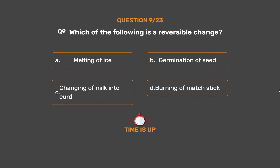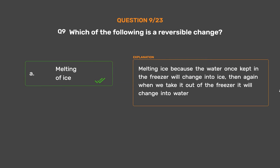The correct answer is Option A: Melting of ice. Water, once kept in the freezer, will change into ice, and again when taken out of the freezer it will change back into water.